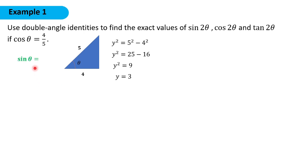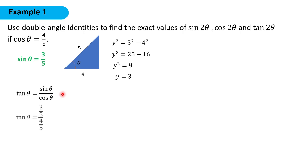Getting sine θ, that would be opposite over the hypotenuse. So the opposite is 3 and the hypotenuse is 5, giving us sine θ = 3/5. To get tangent θ, remember that it is sine θ over cosine θ. By substitution, sine θ is 3/5 and cosine θ is 4/5. We can cancel the 5, so tangent θ is equal to 3 over 4.